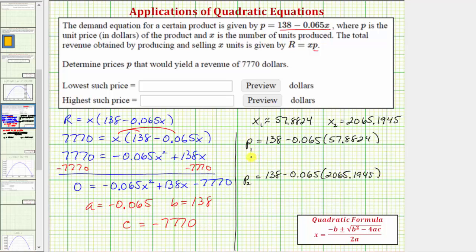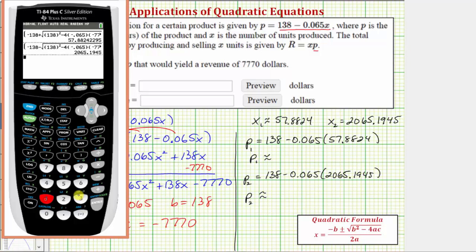Now we'll go back to the calculator. And because this is money, we will round to the nearest cent. So for p sub one we'll have 138 minus 0.065 times 57.8824. So to the nearest cent we would have $134.24.